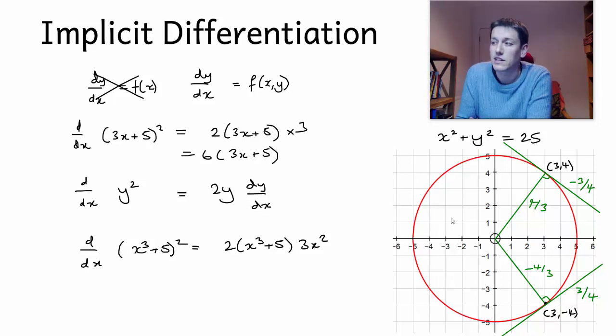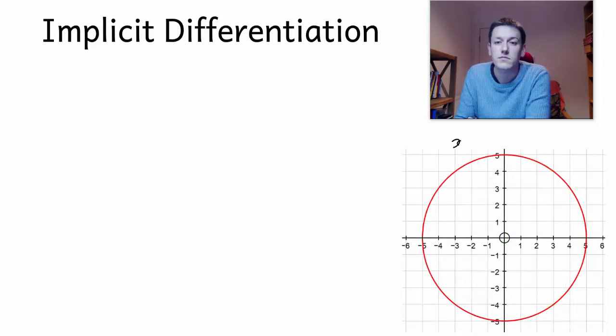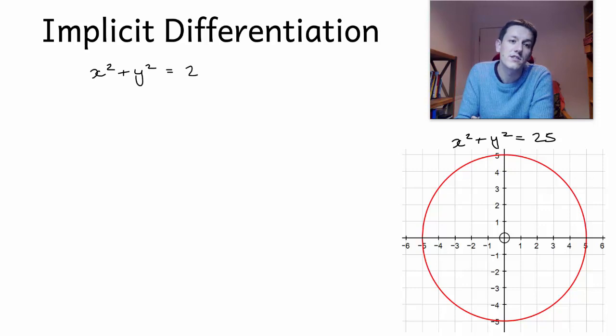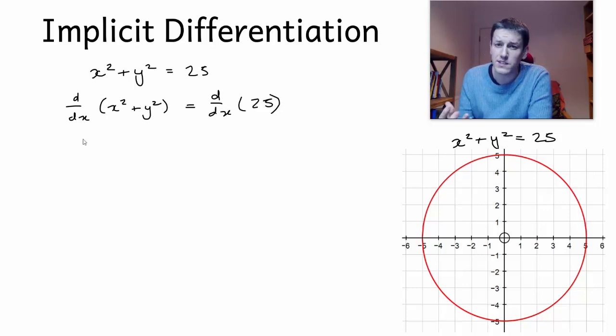And we can use that idea to deal with this circle. So this circle, same one I've got here, x squared plus y squared equals 25. Let's start with that equation and differentiate both sides with respect to x. So I get d/dx of (x squared + y squared) is d/dx of 25. This is something you'll get used to in implicit differentiation problems - a valid thing to do to both sides of an equation is to differentiate it with respect to x.